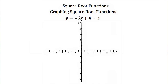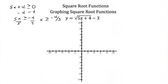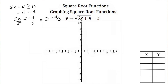Now let's try graphing something a little harder: y equals the square root of 5x plus 4, all minus 3. First, let's find the domain. Everything under the square root cannot be negative, so 5x plus 4 must be greater than or equal to 0. Subtracting 4: 5x must be greater than or equal to negative 4. Dividing by 5: x must be greater than or equal to negative 4 fifths. So I'll start my table at negative 4 fifths and also pick 0, 1, and 9.